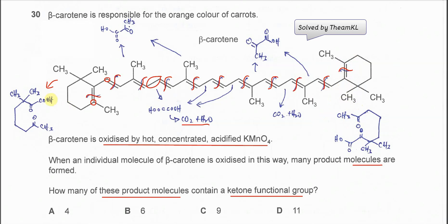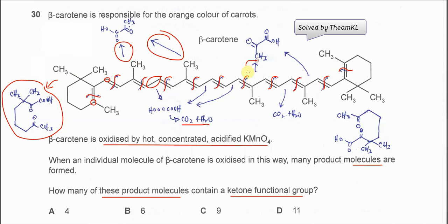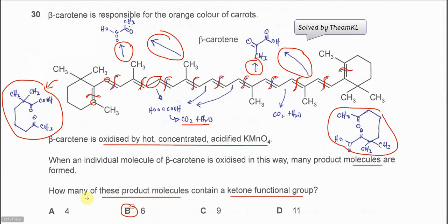So, how many molecules? Counting: one, two, three, four, five, six. It will form six product molecules in total. How many of these contain a ketone functional group? The answer is six — you can see that two of those products each contain a ketone.